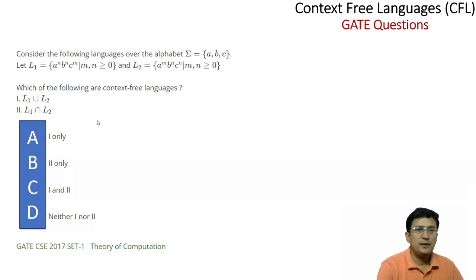Let's take another question. L1 is a power n, b power n, and c power m. Comparison is required between a and b only. So we will say that L1 is context free language. The second language L2 is a power m, b power n, c power n. Here b and c comparison is required - number of b's should be equal to number of c's. So L2 is context free.